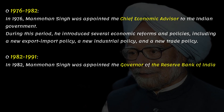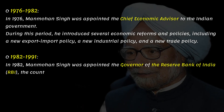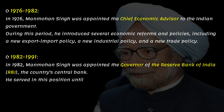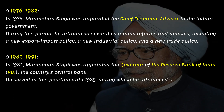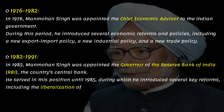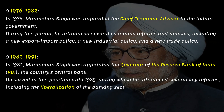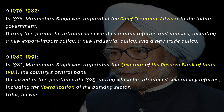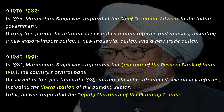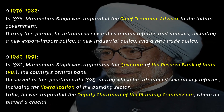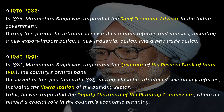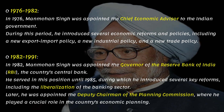In 1982, Manmohan Singh was appointed the Governor of the Reserve Bank of India, the country's central bank. He served in this position until 1985, during which he introduced several key reforms, including the liberalization of the banking sector. Later, he was appointed the Deputy Chairman of the Planning Commission, where he played a crucial role in the country's economic planning.